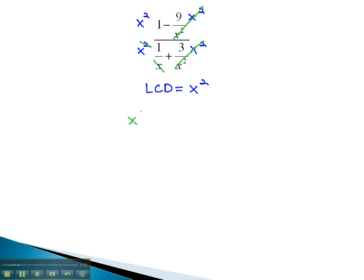We now have x squared minus 9 over x plus 3. Now that the compound fraction has been eliminated, we're able to continue simplifying.